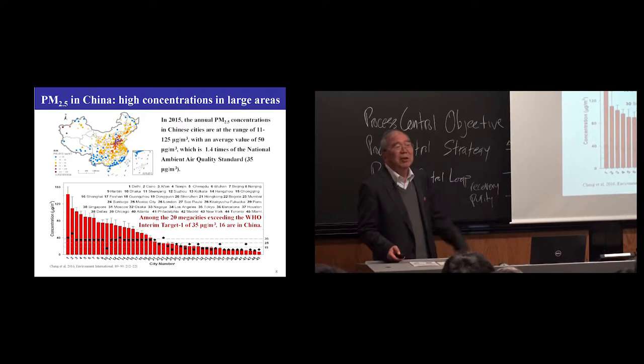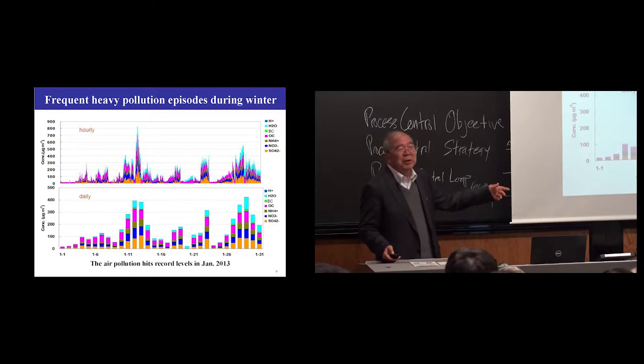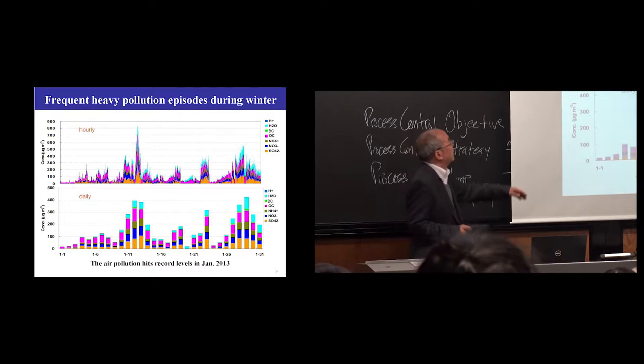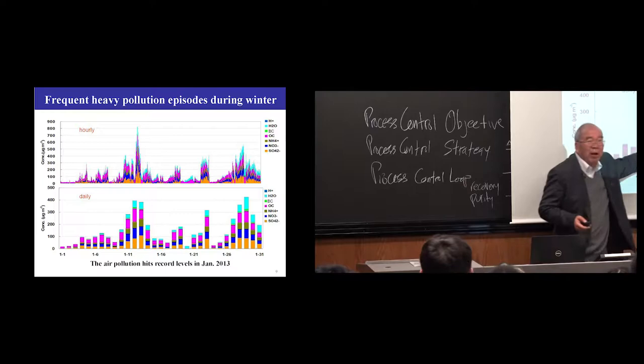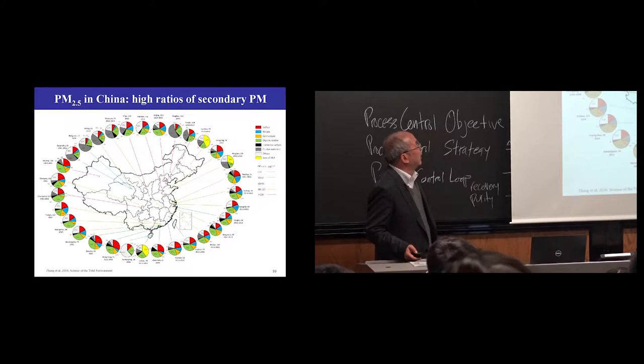The air quality is not good. WHO gave 20 megacities as most polluted. How many from China? 16 from China. That's in the year 2013. Sometimes in 2013 January, this is the bi-hourly air pollution concentration. This is the highest, much higher than standards.